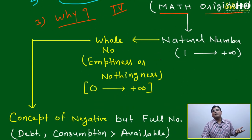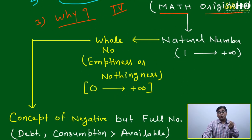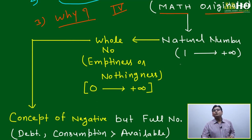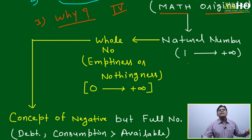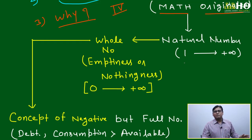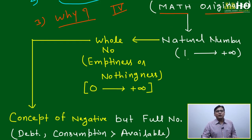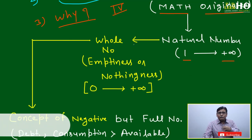Based on counting one, two, three, math originated, and slowly it became more complicated. But once you know all methods started from one, two, three, four — you will be able to understand each and every math concept in a better way. From counting, it has come to natural number, and natural number goes only in the positive direction: one, two, up to plus infinity.